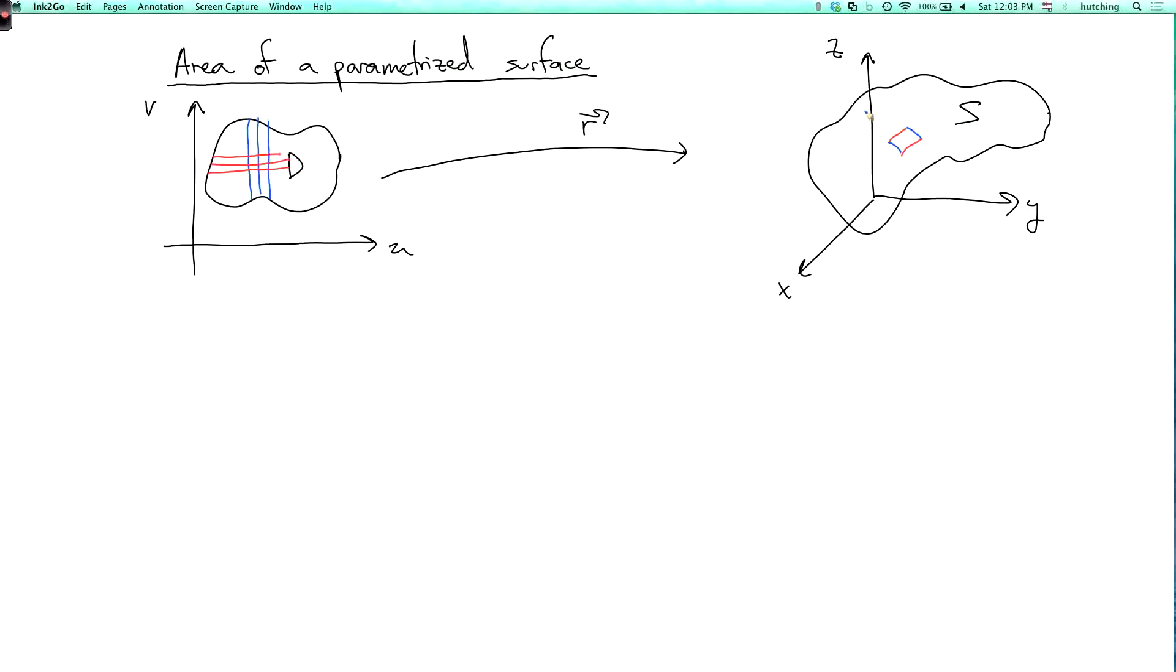Now, if you take a really small rectangle of size, let's say its horizontal width is delta u, and its horizontal height is delta v, then what it gets mapped to by r is approximately a parallelogram. At least if we assume that this map is differentiable.